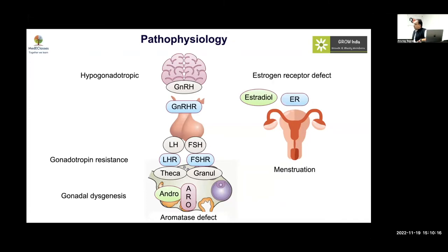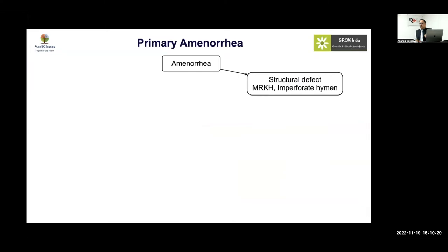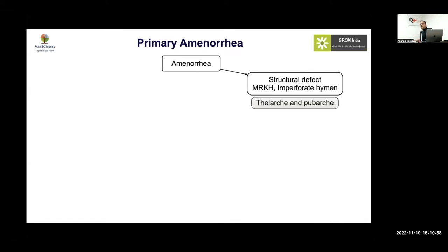FSH receptor problems cause significant pubertal development issues. Aromatase abnormalities cause atypical genitalia at birth followed by primary amenorrhea. Estrogen receptor problems produce a tall individual with inappropriately normal or high estradiol. Structural defects like Müllerian abnormalities or, rarely, imperforate hymen also cause primary amenorrhea. Imperforate hymen is easy to identify but often missed — a young girl presenting with acute abdominal pain and an abdominal lump should prompt checking breast development and menstrual history, as this may be cryptomenorrhea.